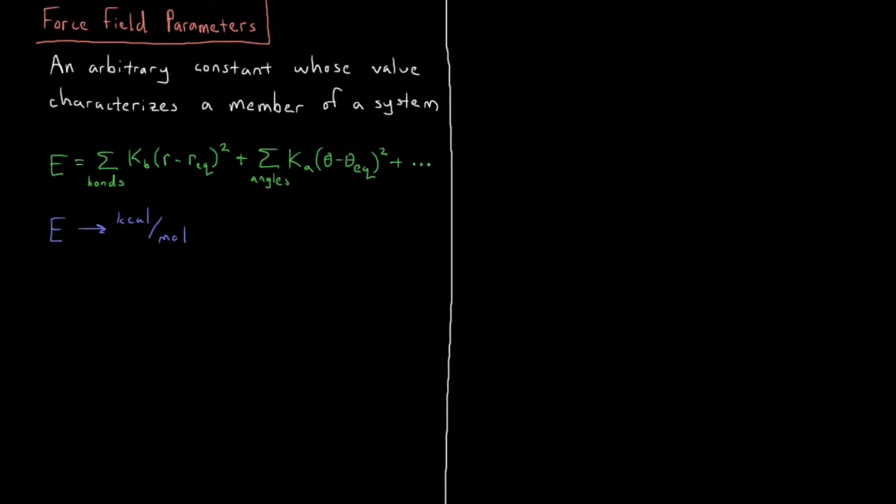And then the unit that we have for R, the bond length, is typically convenient to express in angstroms. Since the bond is in angstroms and we're subtracting it with the equilibrium bond length, it also makes sense that Req, our parameter, should also be in angstroms as well.